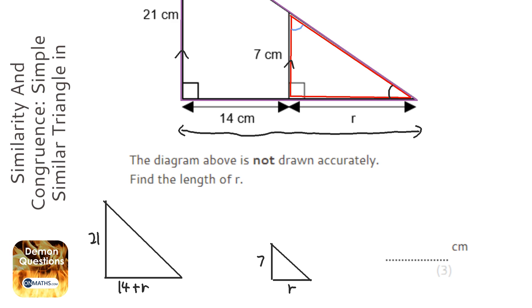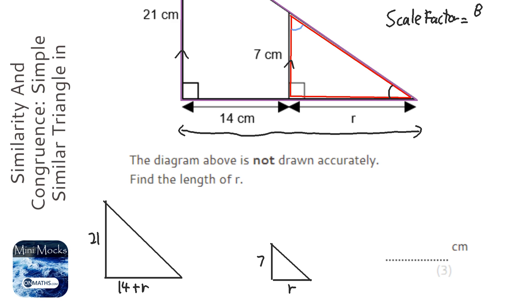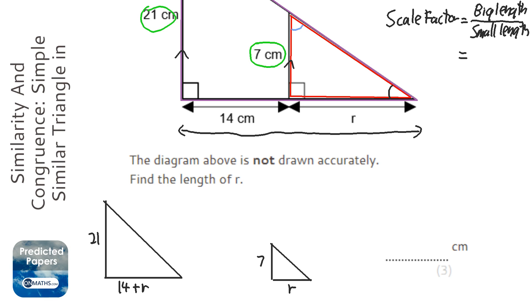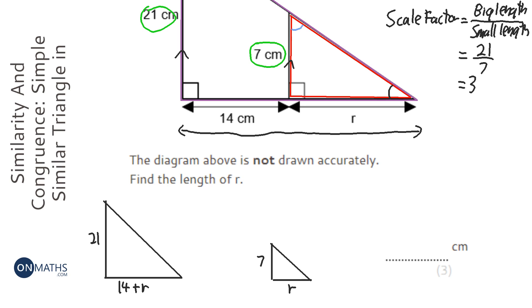With all enlargements there is a scale factor, and the scale factor is what you multiply all of the smaller lengths by to get the bigger length. I'm going to work out the scale factor as big length over small length. The two corresponding lengths we have are 7 and 21, so we do 21 over 7, which equals 3.